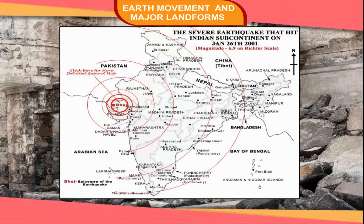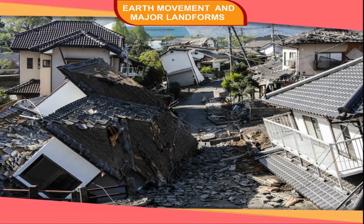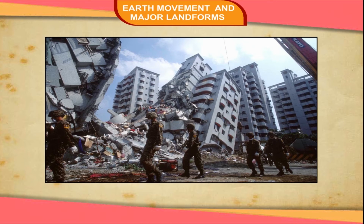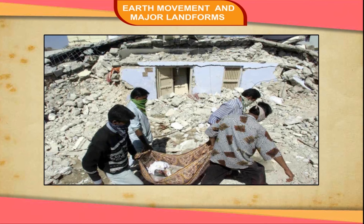The region around Bhuj therefore suffered the maximum damage. Going by previous records, the risk of violent and destructive earthquakes is very high in the Bhuj region. Rules for constructing earthquake-resistant buildings should have been strictly followed, which could have restricted the collapse of buildings — the main cause of deaths in an earthquake. Besides, the Bhuj region is very densely populated, which is another reason for the large number of deaths.